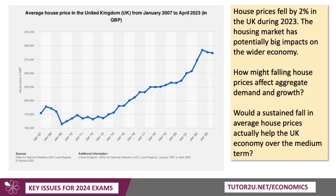The housing market is also probably worth looking at. Are we reaching a turning point here? We know that house prices, having risen for many, many years, fell by 2% in 2023. The question is, how might falling house prices affect aggregate demand? How might they affect economic growth? And in particular, would a sustained fall — which is unlikely, but we've had it in the past as you see on the chart — would a sustained fall in property prices actually help the UK economy over the medium term?